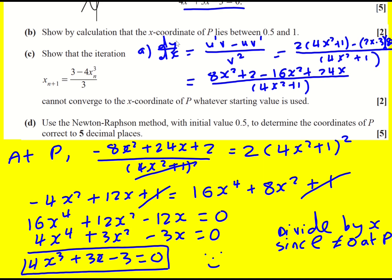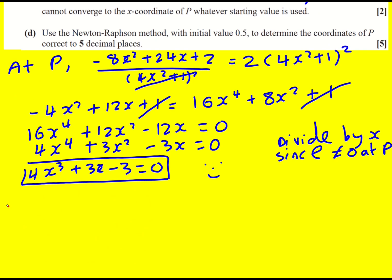Now show by calculation the x-coordinate of P, that's the x satisfying this equation, is between 0.5 and 1. So I'm going to let f function equal 4x cubed plus 3x minus 3. Let's find out f of 0.5 and f of 1. Actually, f of 1 is very quick to do.